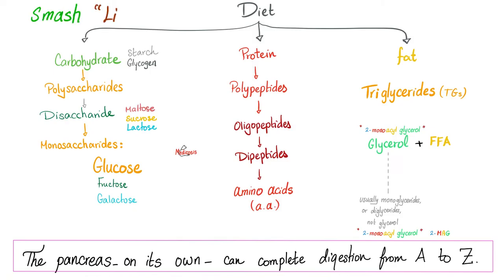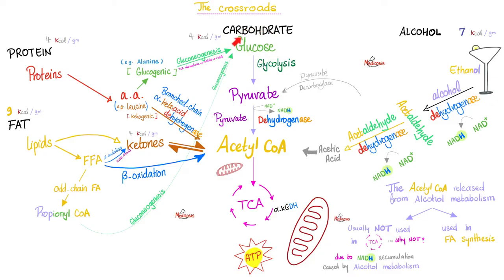Why do we need pyruvate kinase? Back to basics: your diet is either carbs, proteins, or fat. Break down the carbohydrates — that's called digestion — until you get the monosaccharide called glucose. Why is glucose so important? Because it has six carbons.